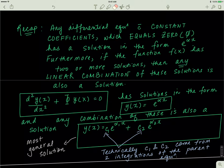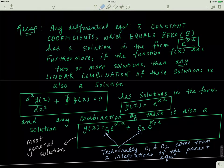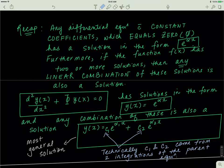Last time we finished off with this idea that if you have any differential equation that has constant coefficients and it's equal to zero, then it has a solution in the form e to the exponent alpha x, where alpha must be determined. If you have a second-order differential, you'll have two solutions; if you have a third-order differential, you have three solutions, and so on. The important thing is that if f of x has two or more solutions, then any linear combination of these solutions is also a solution to the parent equation.